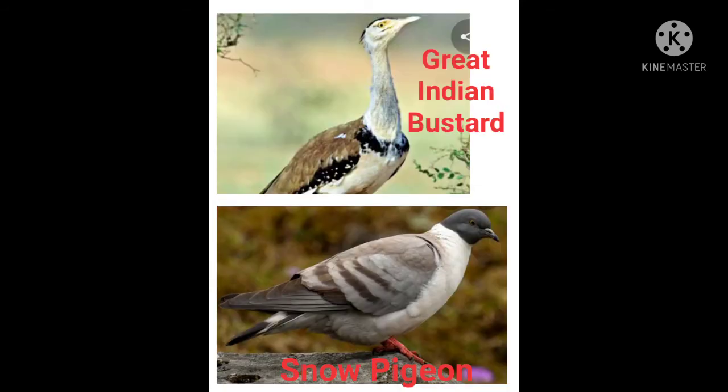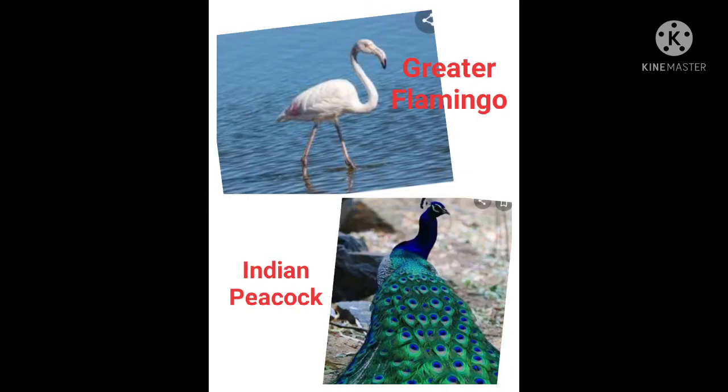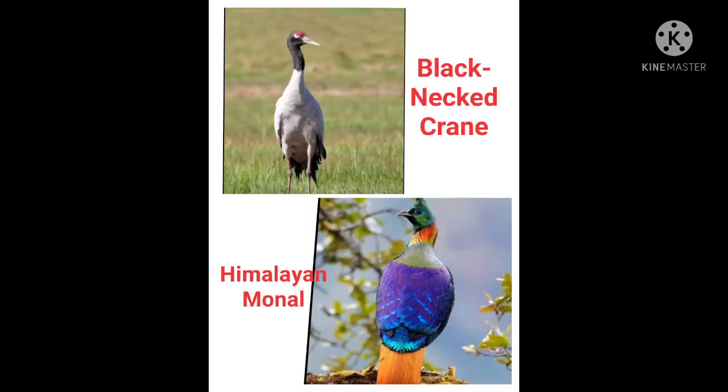Great Indian Bustard, Snow Pigeon, Greater Flamingo, Indian Peacock, and Black-Necked Crane are among the most common fauna species of Uttarakhand.